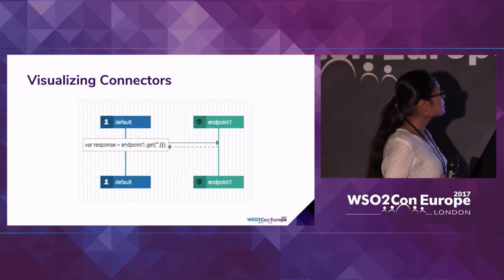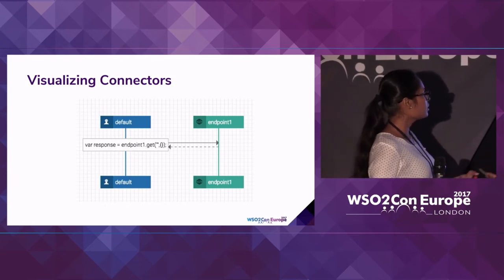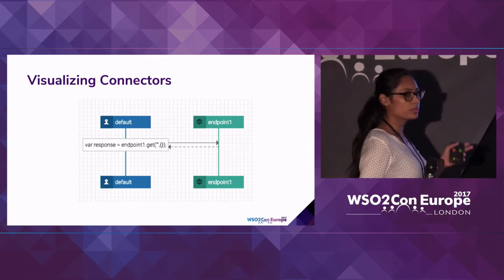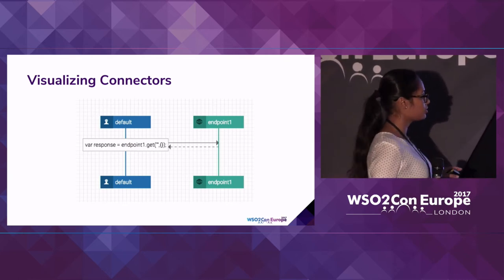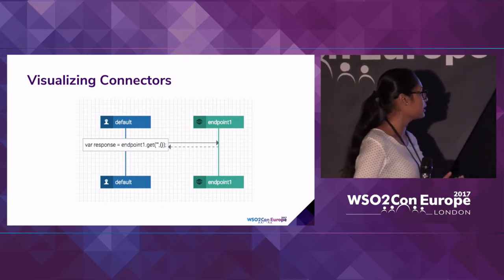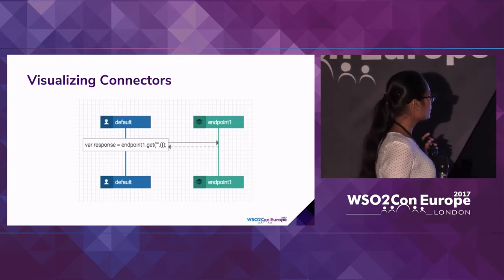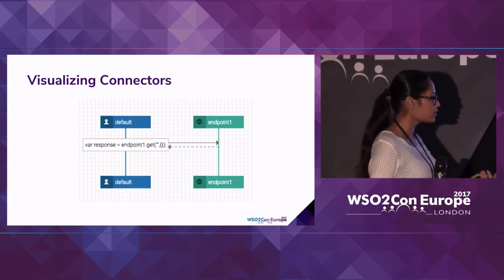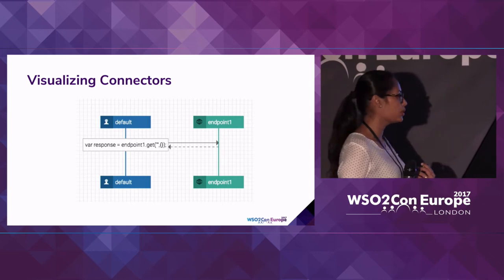This is the visual representation of the definitions just described. What you see on the right side is the endpoint, which represents the external participant or the connector, and what you see on the left is the default worker — the main execution thread in a Ballerina program. The statement box with arrows going in and out from the default worker represents the action invocation. The arrow leading to the endpoint is where you send the request or invoke the action on the connector, and the arrow coming back from the endpoint is where you get the response back.